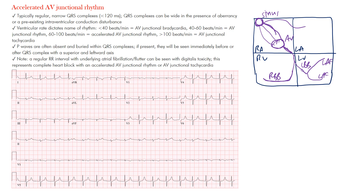When we talked about sinus rhythms, it originates in the sinus node. An atrial rhythm originates from the atria. For an AV junctional rhythm, it originates from within the AV junctional region, meaning the origins above it are not conducting fast enough.